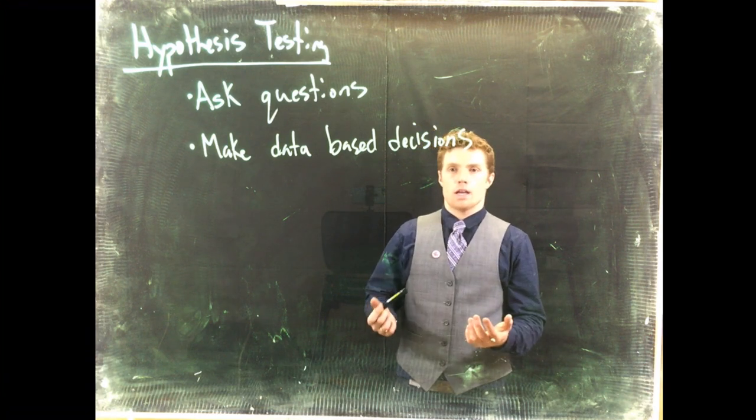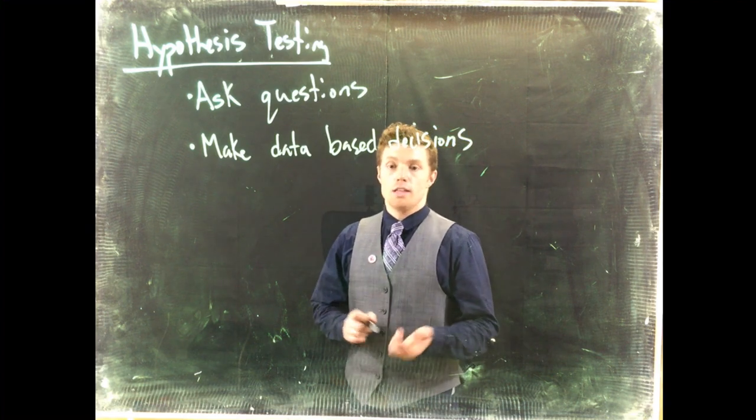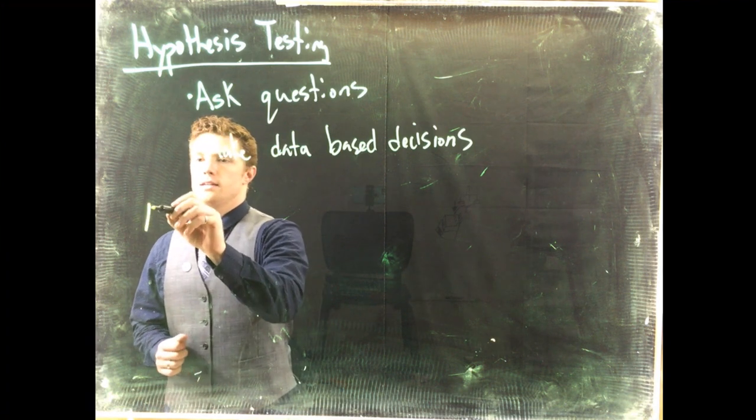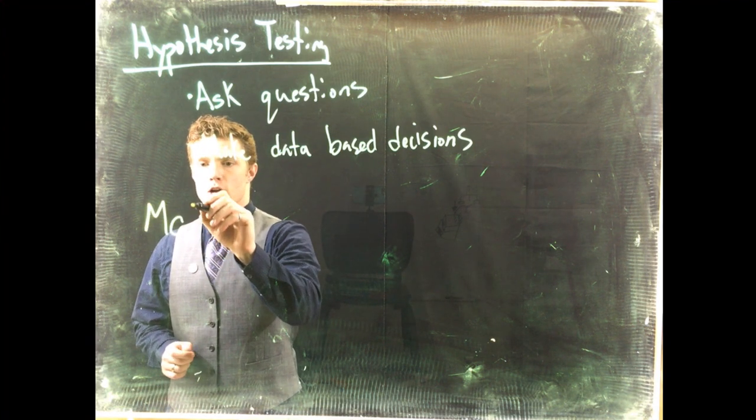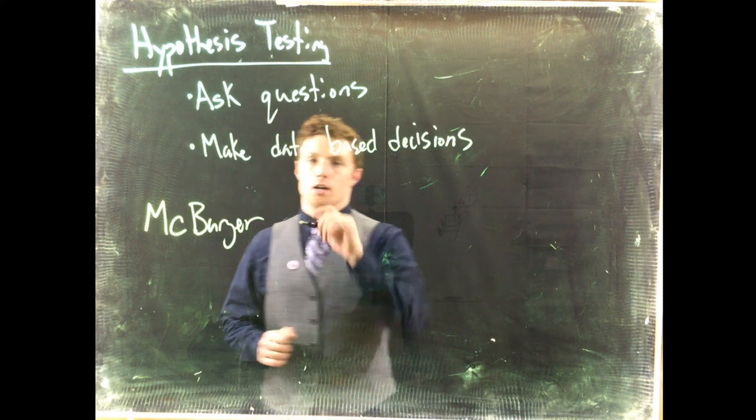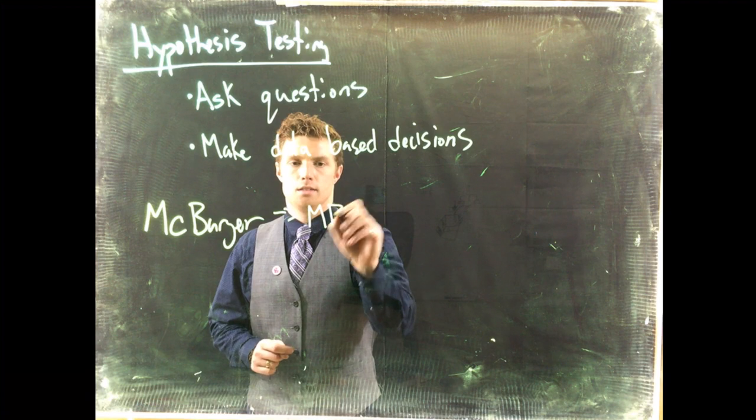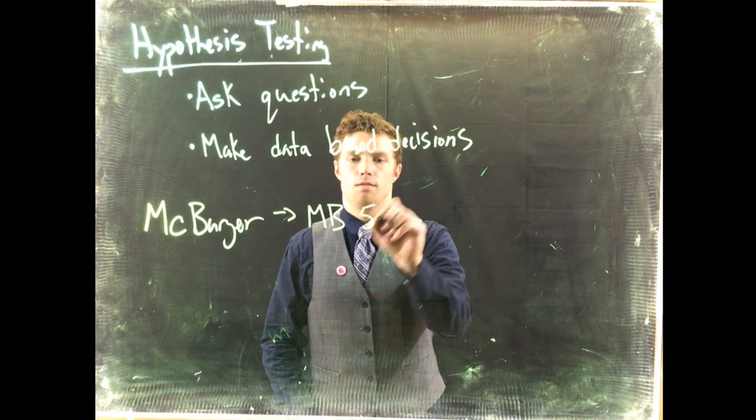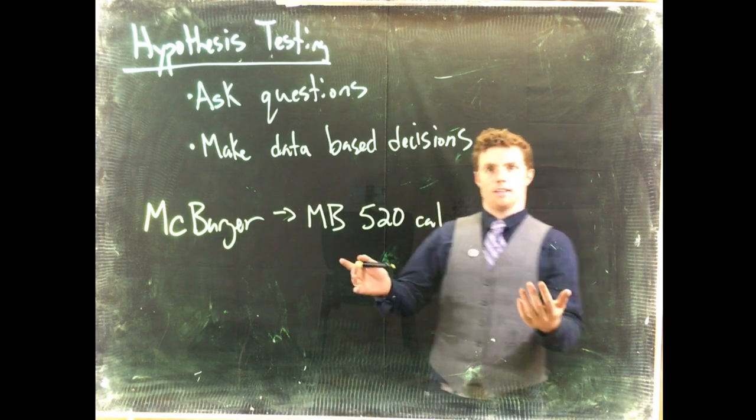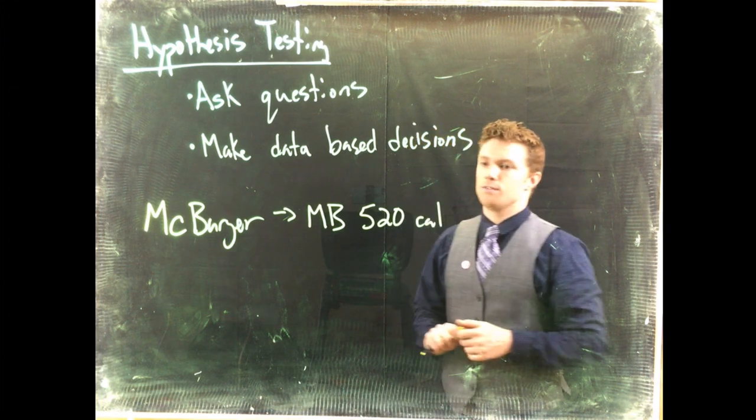So let me give you an example of what our hypothesis testing could in fact help us to do. Let's suppose that we've got a fast food company and we'll call it McBurger. McBurger is out and they claim that their new sandwich, we'll call it simply the MB, has 520 calories. That's their claim that the FDA says they have to have some sort of caloric statement on there and they say it's 520 calories.